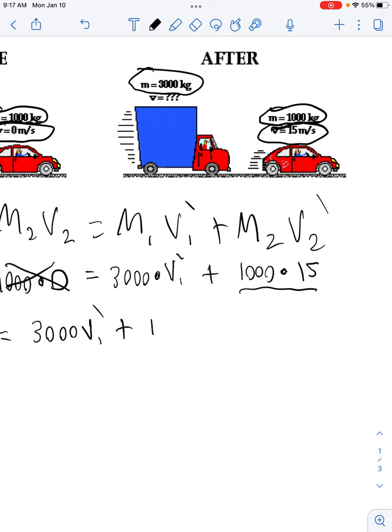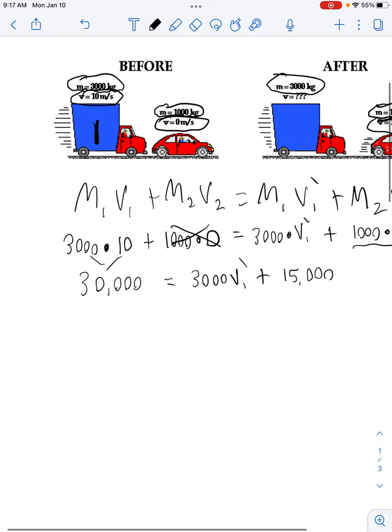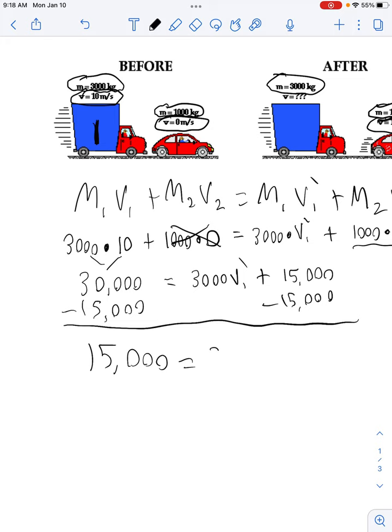All right, we want to get V1 prime by itself. So we got to get rid of that 15,000 on the right side. In order to do that, we subtract 15,000. Whatever you do on the right side, you must do on the left. So we subtract 15,000 over here. 30,000 minus 15,000 gives you 15,000. Equal sign drops. We get 15,000 equals 3,000 V1 prime.